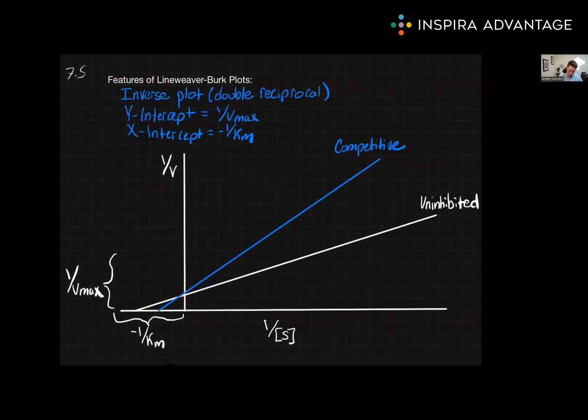But we see that Km increases, which means that the denominator increases. So the x-intercept will be closer to the origin for competitive inhibitors.